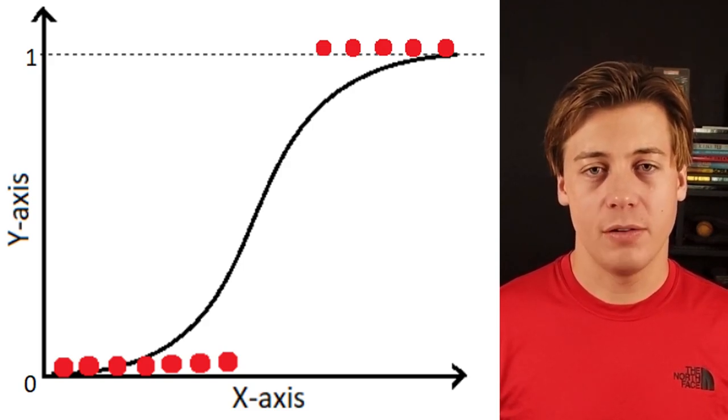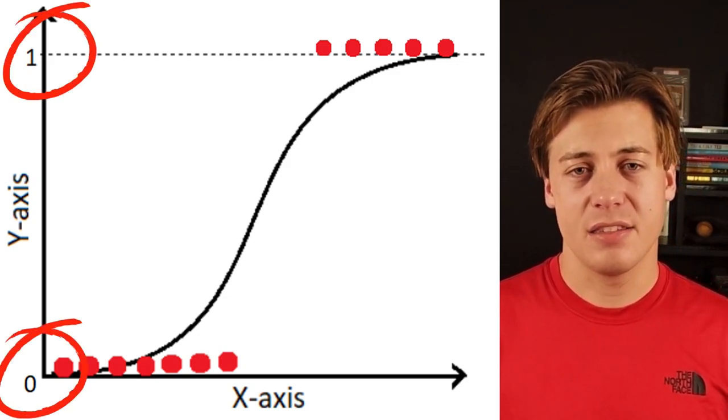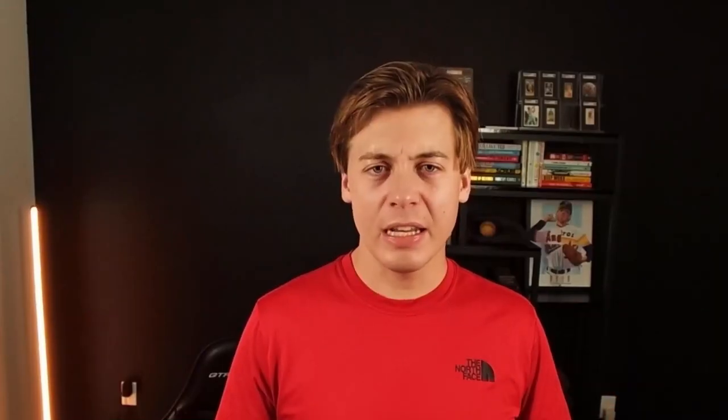Instead of your normal linear regression where the outcome continues to go down or upwards, you're going to have a binary decision — think of a zero or one. Some examples would be like if someone's going to buy a product, you have some factors that deal with that, and then the final outcome is yes, someone buys a product, or no, someone does not. Another example could be if someone has a disease — either yes they do, or no. So a binary output.